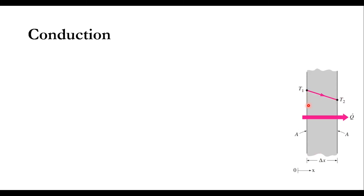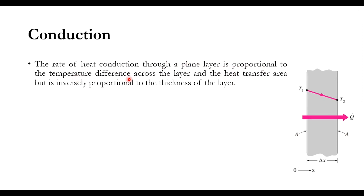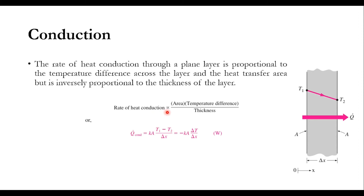Looking at the diagram: labelling one end as x1 and the other as x2, delta x is the thickness, and temperature transfers from T1 to T2 in the direction of decreasing temperature. The rate of conduction is proportional to the temperature difference across the layer and the heat transfer area, but is inversely proportional to the thickness. So: rate of heat conduction is directly proportional to area multiplied by temperature difference, divided by thickness.